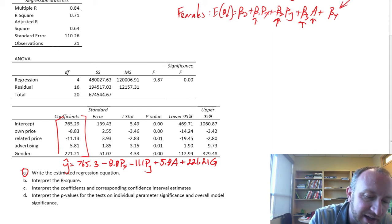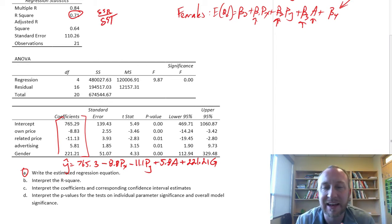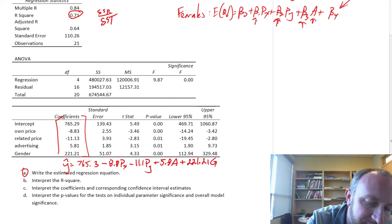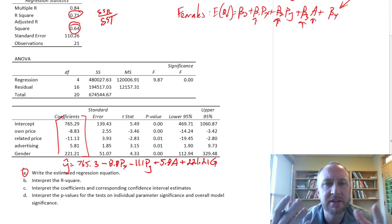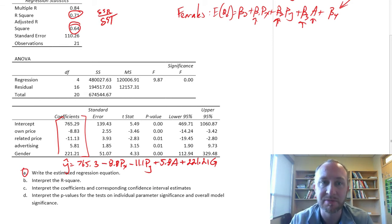What is the r-squared? R-squared is 0.71. That tells us that our chosen independent variables—own price, related price, advertising, and gender—together they capture 71% of the variation in quantity demanded. The adjusted r-squared is 0.64, still sufficiently high. We still have all the signs of a reasonable model.